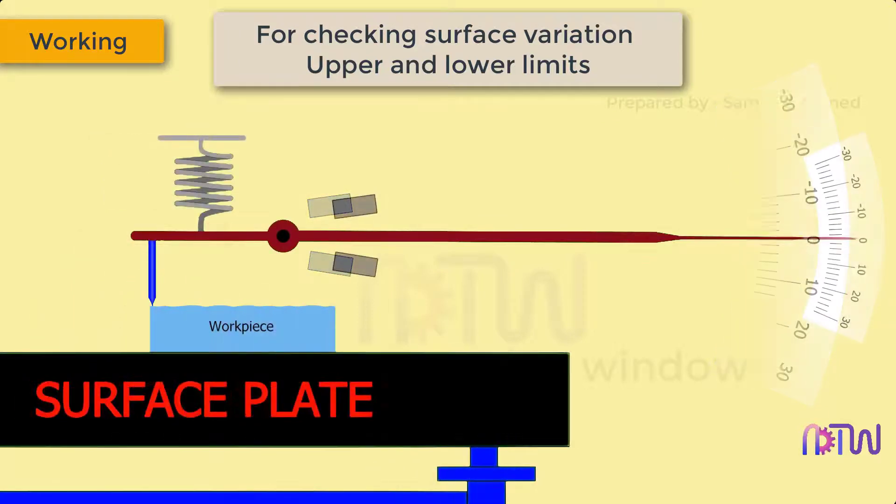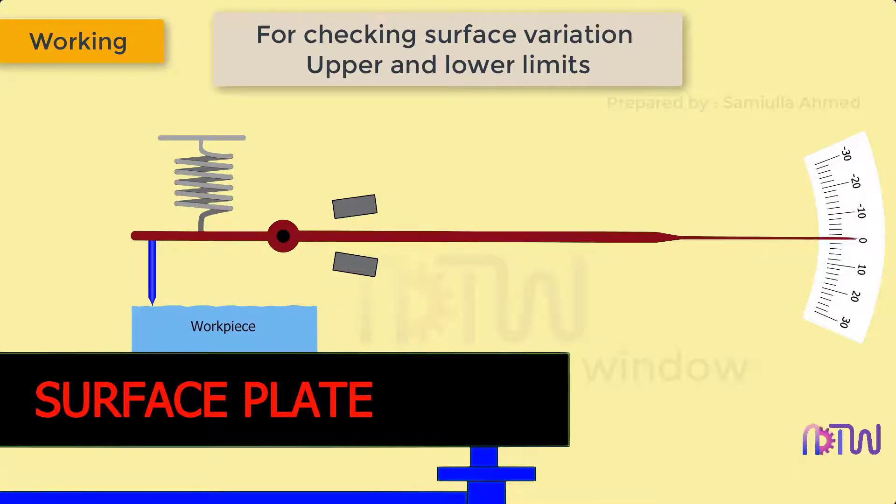Now place the component whose surface variation needs to be checked on the surface plate below the plunger by removing the slip gauges and sliding it below the plunger. If any irregularities are present on the surface of the component, the plunger moves up and down. This plunger movement is magnified by the lever which is pivoted and deflects the pointer on the graduated scale.